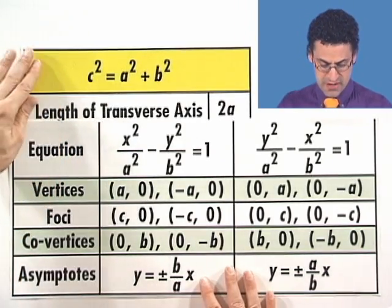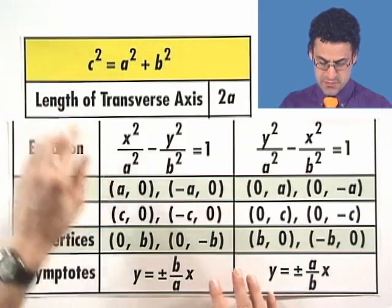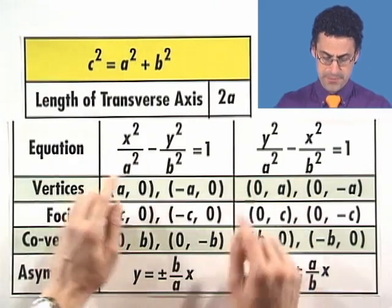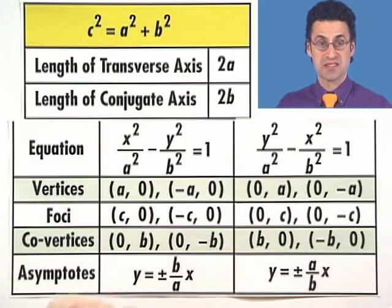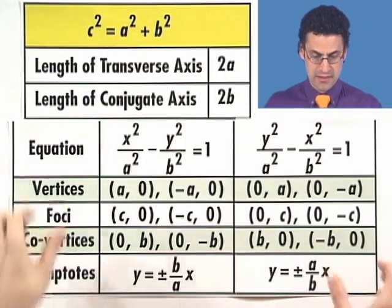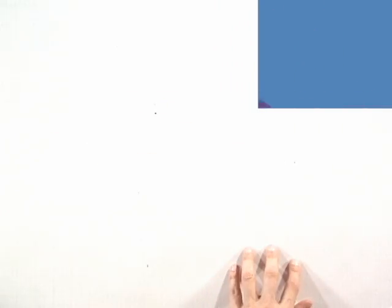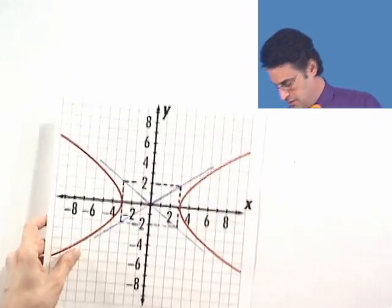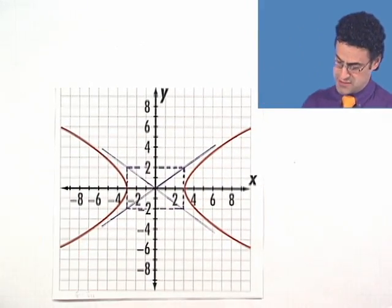There's also some other objects we can talk about. We can talk about the length of the transverse axis, which is going to be just double the a. And the length of the conjugate axis, which we'll see in a second, which is twice b. All right. Let's see these things in action. There's way too much information here. But when we look at examples, all of a sudden things will begin to slowly fall into place. It's just practice, really. That's all it is.